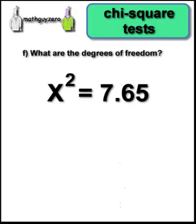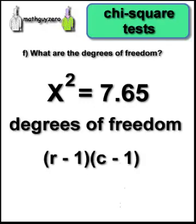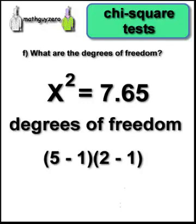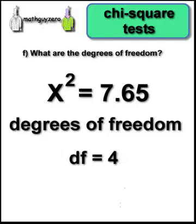Degrees of freedom — we'll just use the formula: number of rows minus 1 times the number of columns minus 1. So it's 5 minus 1 times 2 minus 1, which comes out to 4. So now we know the degrees of freedom is 4.